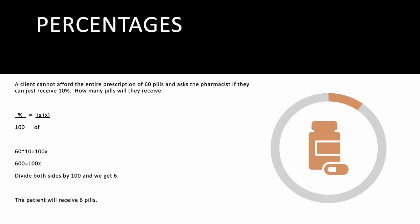For percentage math: a client can't afford 60 pills and wants 10%. Use the formula percent over 100 equals X over the total — so 10/100 = X/60. Cross multiply: 100x = 600, then divide both sides by 100, giving you X = 6 pills.